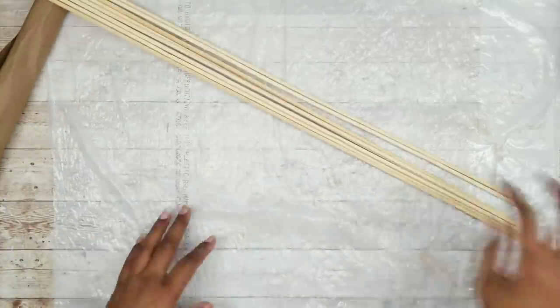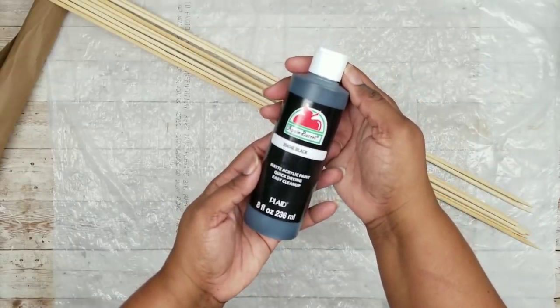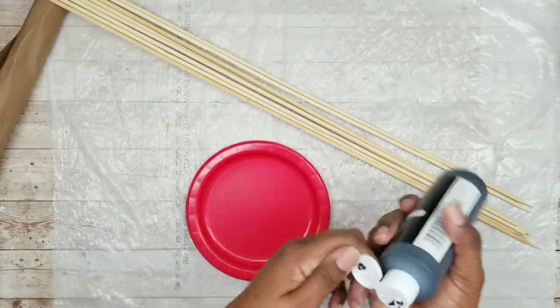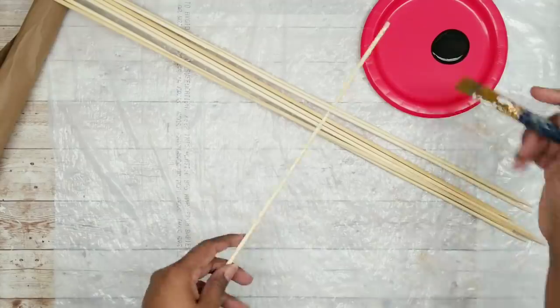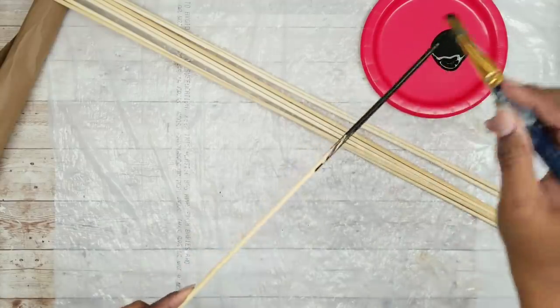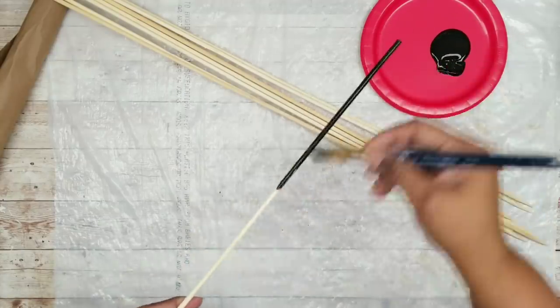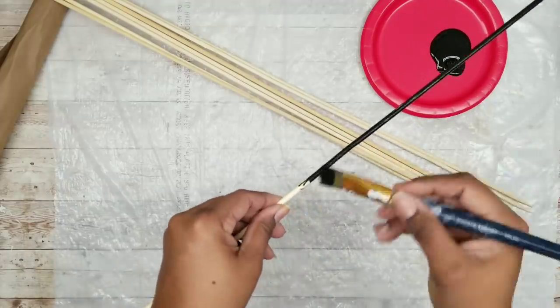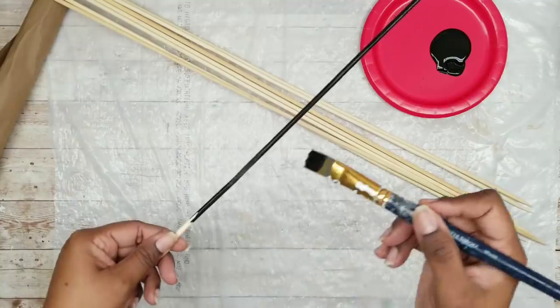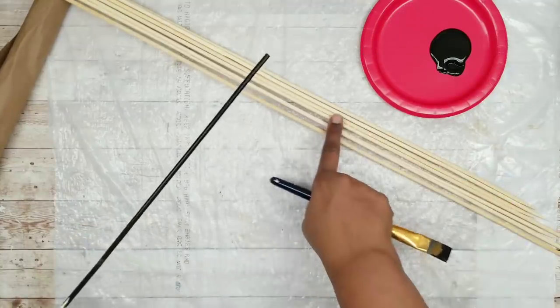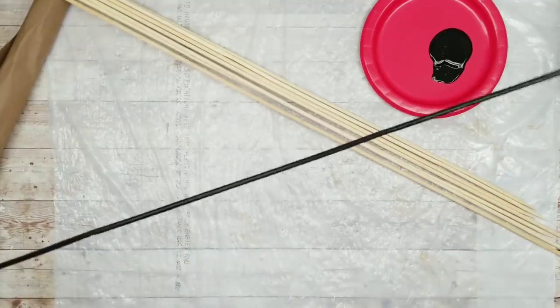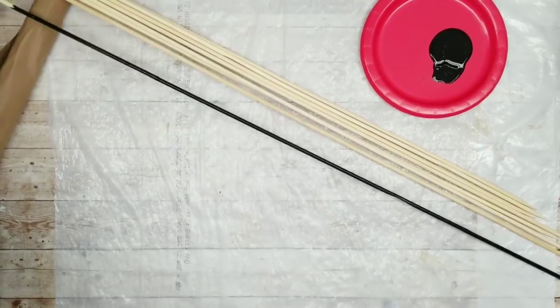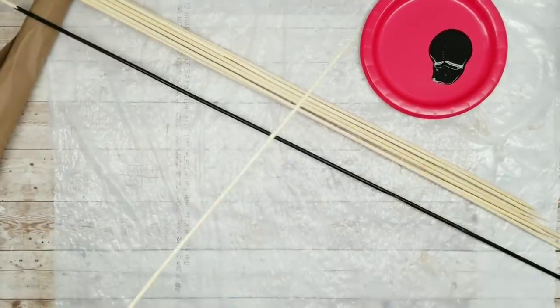While those dry, we're going to work on our skewers. I just grabbed a handful from the package and I'll be using this black acrylic paint to paint my skewers. You can use whatever method you like to paint the skewers. I'm just using one of these paintbrushes from the Dollar Tree and I want to make sure I cover the entire skewer with the paint, except the pointy end which you're holding while you are painting them.